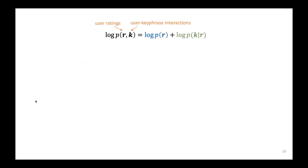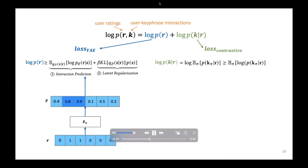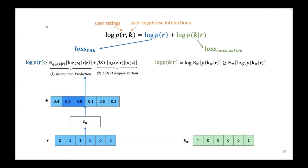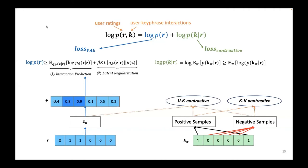In the derivation of the objective function, given the user's historical interaction records R and their corresponding keyphrase preferences K, we are maximizing the joint log likelihood, which can be factorized into two components. The rating likelihood log P(R) is modeled through its variational lower bound, giving us the VAE-CF objective. The conditional term log P(K|R) gives the contrastive loss portion, and we optimize its lower bound to avoid computing the log expectation term. Given the keyphrase preference vector for a user, we obtain positive and negative samples, compute the keyphrase contrastive loss, and similarly compute contrastive losses between the user representation and the keyphrase samples.